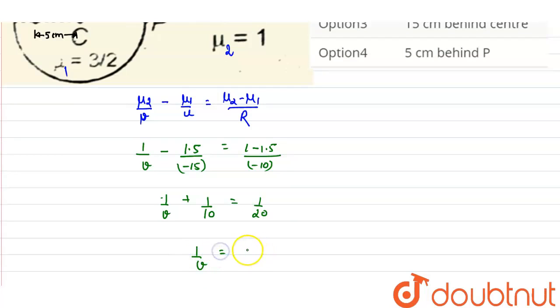So from here, 1 upon V will be equals to 1 upon 20 minus 1 upon 10. So this will come out as minus 1 upon 20.